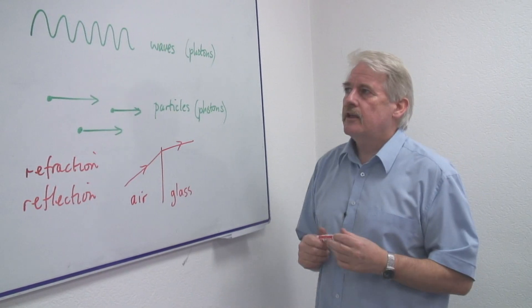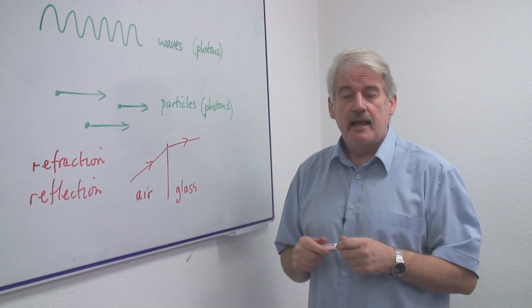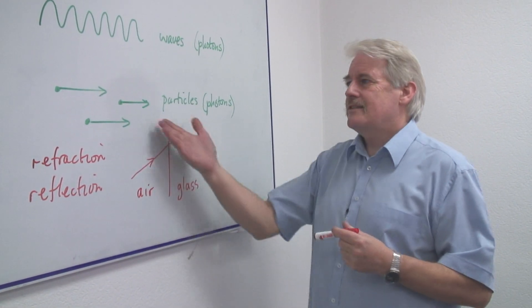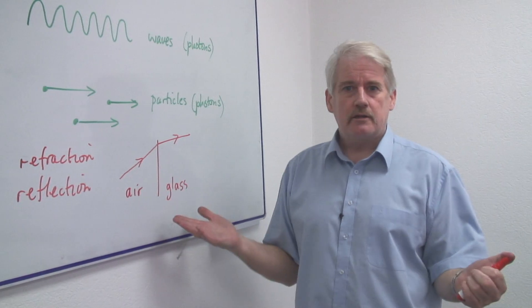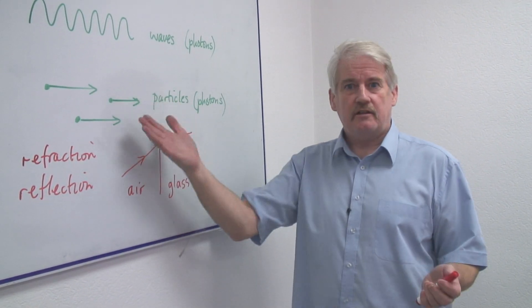One advantage of thinking of it as a wave, and certainly it does have wave properties, is that it's easier to explain different colors. Because if we explained it in terms of particles, how can we explain the different colors? Is each particle a different color?